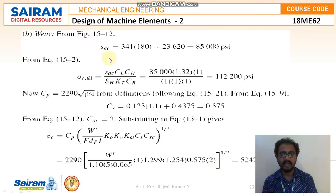Moving to the next one where the formula is SCSE, that is 341 into 180 plus 23 into 620. So it is 85,000 PSI. The allowable stress value is equal to 112 to 112200 PSI. This is the allowable compressive stress I am getting.